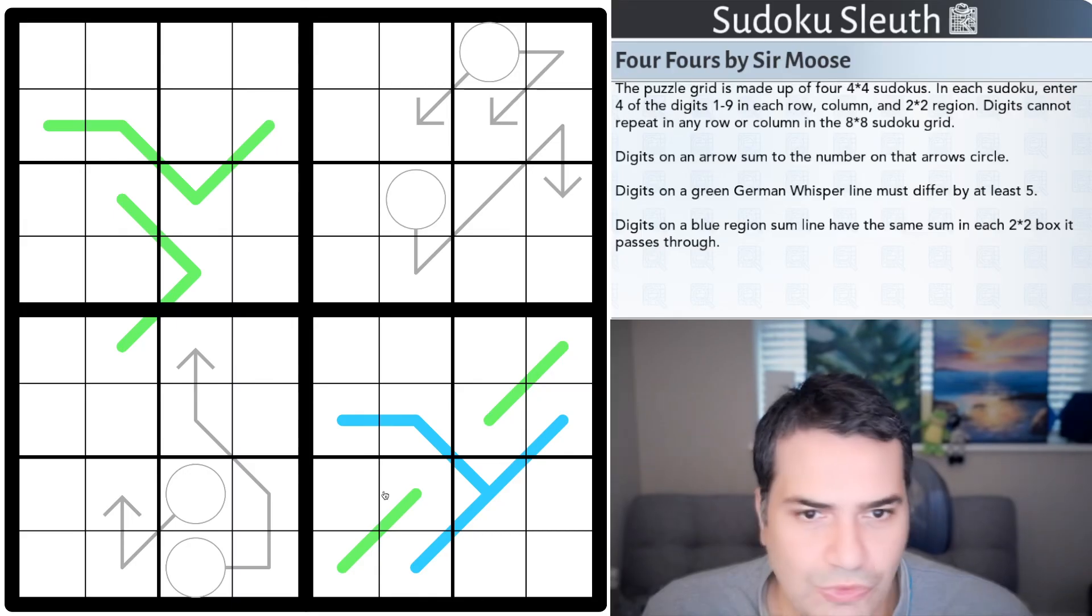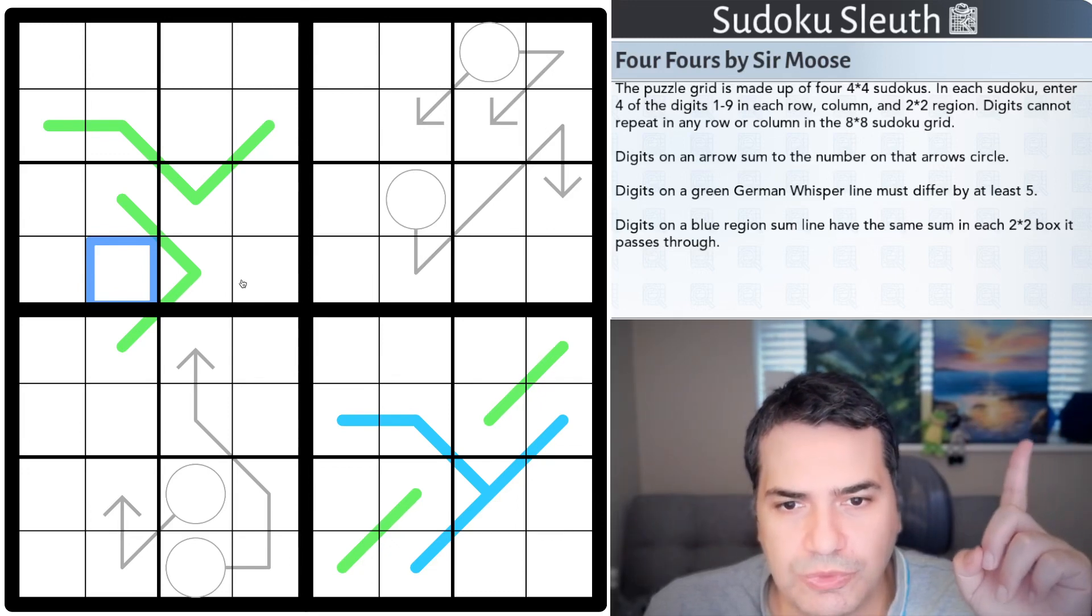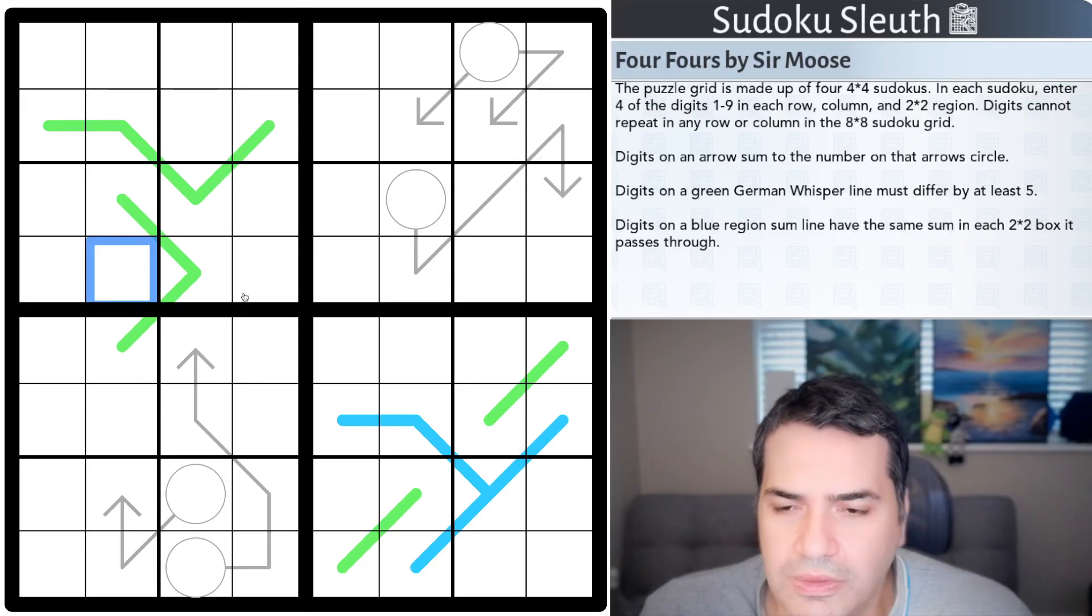Four Fours by Sir Moose. So, rules-wise, one thing I should actually do is, if you haven't played the 2x2 one, I should leave a link up here for you to go and explore that first before you give this one a go. I imagine the type of logic that's involved here will be very similar. So, the puzzle grid is made up of four 4x4 Sudokus. In each Sudoku, enter four of the digits 1 to 9 in each row, column, and 2x2 region.